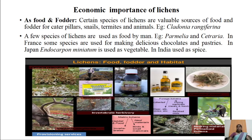Coming to economic importance of lichens, we can study it under two headings: useful aspects and harmful aspects. The first use is lichens as food and fodder. Certain species of lichens are valuable sources of food and fodder for caterpillars, snails, termites, and animals. For example, Cladonia rangiferina is a type of lichen that is a favorite food of reindeer.